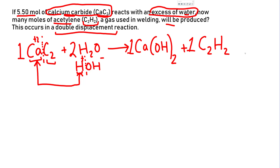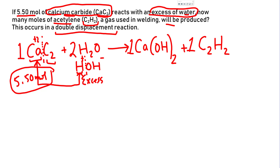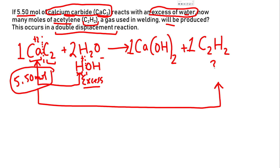The second skill is balancing your chemical reaction. Now, I'm starting with 5.50 moles of CaC₂ — that's what I'm given. I'm reacting it with the excess water. From the limiting reagent and excess concept, the excess is not going to determine your product, so you don't even need to consider it. Whenever you see excess, you already know the other one has to be the limiting reagent. So calcium carbide is the one that determines the amount of acetylene gas produced.